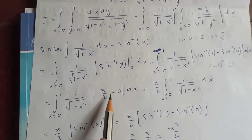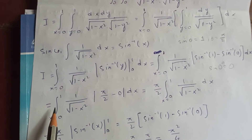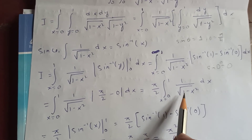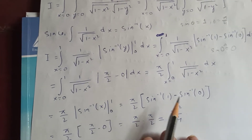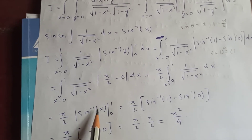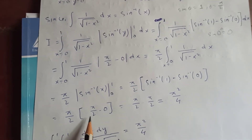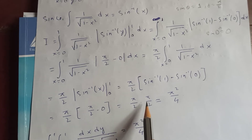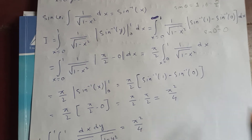So pi by 2 minus 0 is pi by 2. Since pi by 2 is a constant, it comes out before the integral. We are left with the integral from x equal to 0 to 1 of 1 over square root of 1 minus x squared dx, which is again sin inverse of x from 0 to 1. Putting in the values: sin inverse of 1 minus sin inverse of 0 is pi by 2. So pi by 2 times pi by 2 is pi squared by 4.